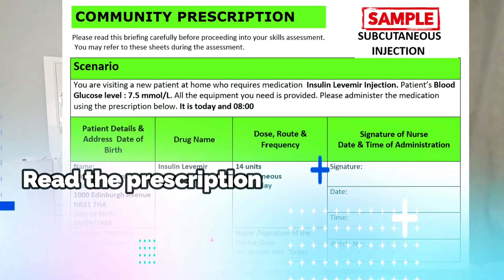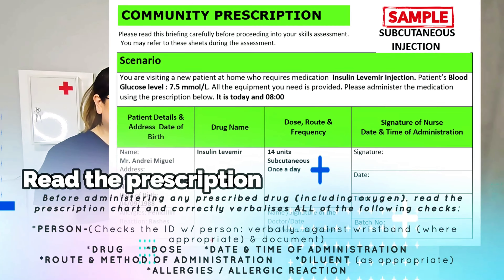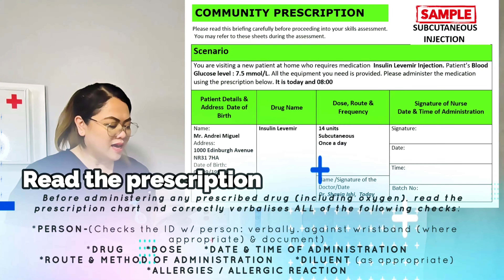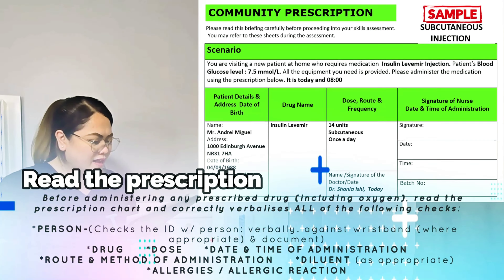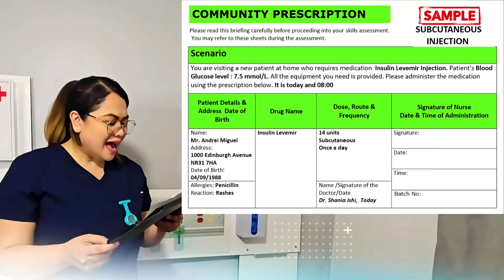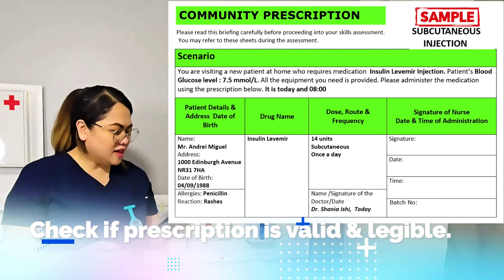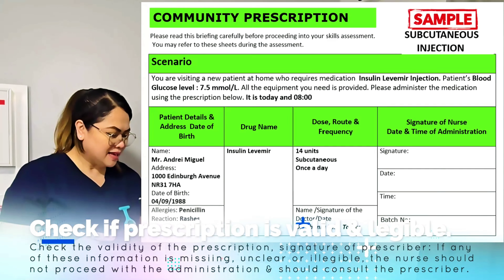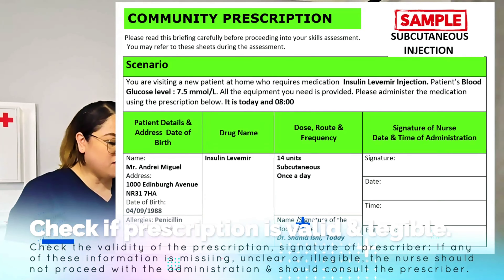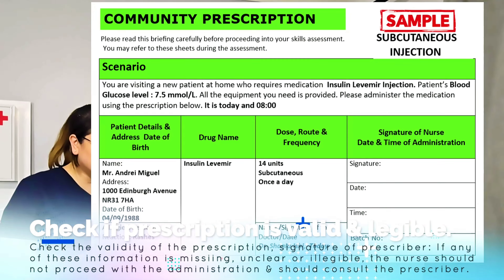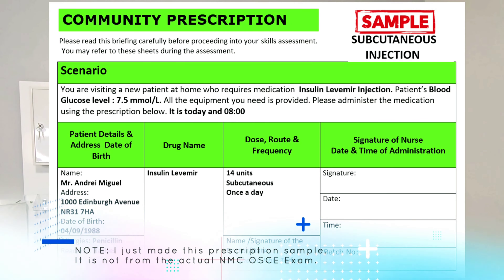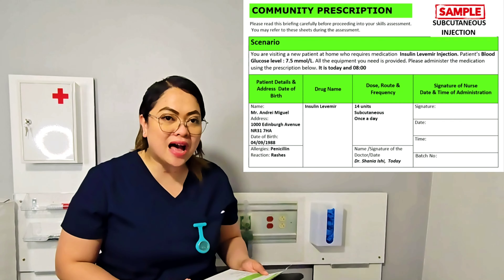Now I'm going to read the prescription. The prescription says: you are visiting a new patient at home who requires insulin Levemir injection. Patient's blood glucose level is 7.5 mmol per liter. Please administer the medication using the prescription below. It is today at 8 in the morning. Patient: Mr. Andre Miguel, address 1000 Edinburgh Avenue, date of birth 4th of September 1988, allergic to penicillin — reaction: rashes. Drug name: insulin Levemir. Dose: 14 units. Route: subcutaneous. Frequency: once a day. Prescriber: Dr. Shania Ishii. Signature and date present. This prescription is valid and legible.